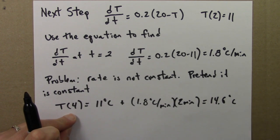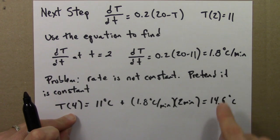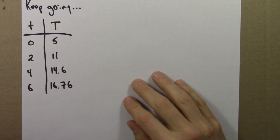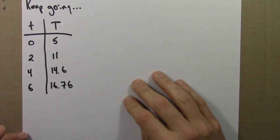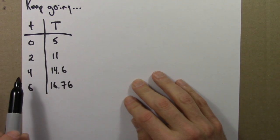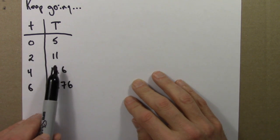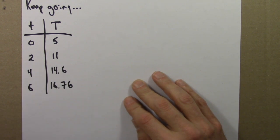We can keep doing this, continue along with this process, and we'll get a series of temperature values for a series of times. So we continue this process and we can put our results in a table. These first three entries we've already figured out. The initial temperature was 5, then at time 2 it was 11, at 4 it was 14.6, and at 6, if one followed this process along, one would get 16.76, and we could keep on going.